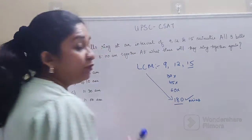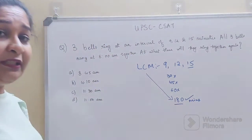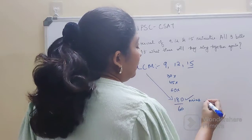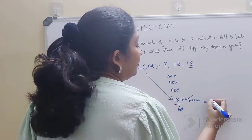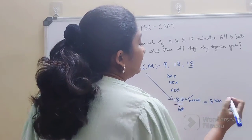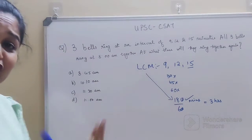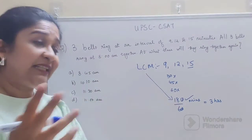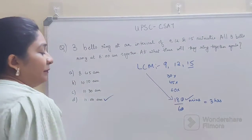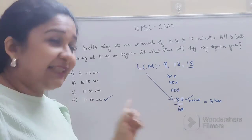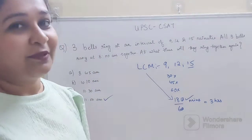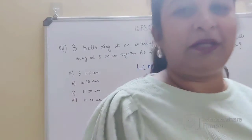To convert it into hours, divide 180 by 60, which gives you 3 hours. So you just add 3 to 8 a.m., and that gets you 11 a.m. That is your answer for this complicated-looking sum. That's it for today — I'll see you in the next one.